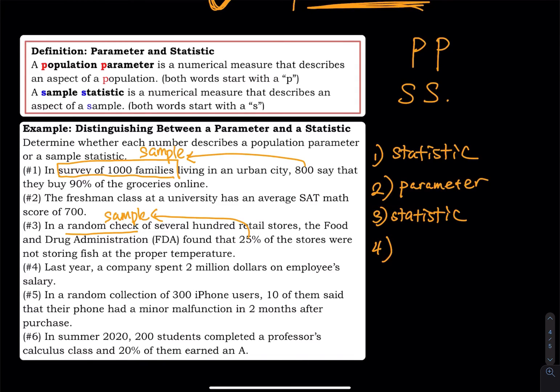Number four, last year, a company spent $2 million on employee salary. So that is the total amount that they pay their employees, pay every single employee. So that is a parameter. Describes the population. The population is all employees in their company.